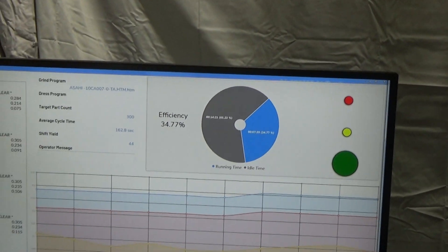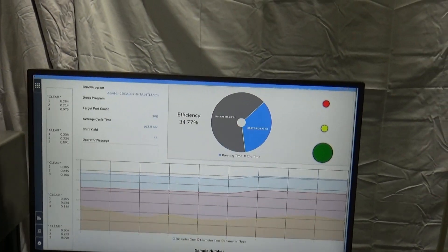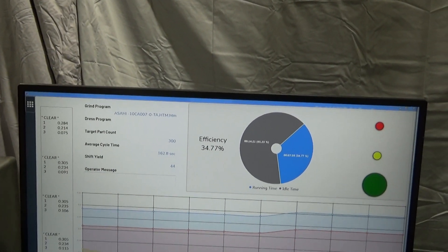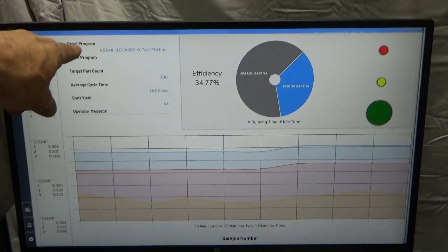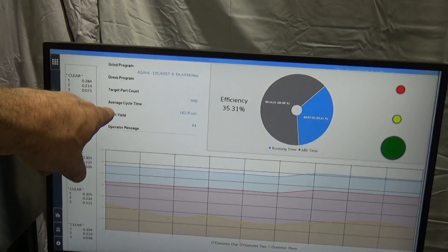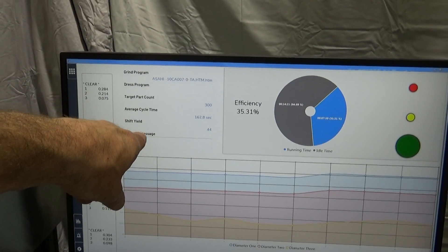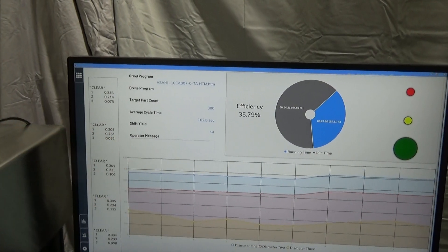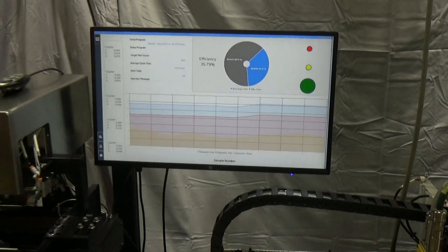It will also tell you your efficiency that you're running at right now, and normally it will be higher than 34.77%. It will be your grind program, dress program, how many parts you want to run on that, your cycle time, your yield, and if the operator wants to leave a message or the technician wants to leave a message for the operator.